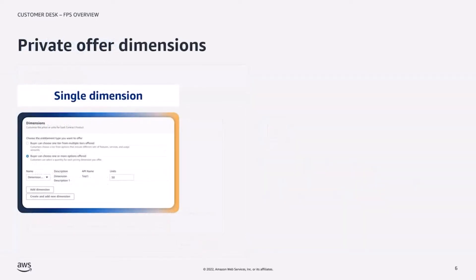In the offer creation page, the seller can set the dimensions or instance types that are offered as part of the private offer contract in the dimensions section. Here, the seller can choose one or more options offered and input the different dimensions along with the quantity for each.